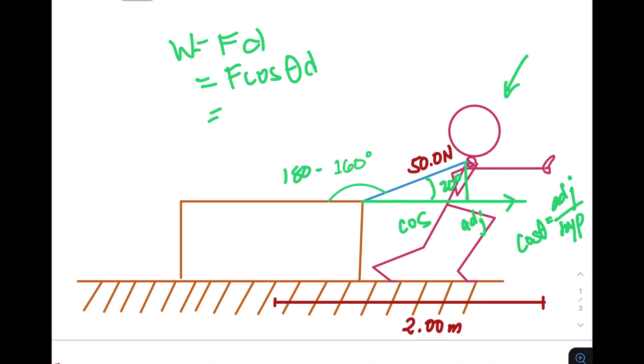Now let us substitute the values. So we have force, which is equal to 50 newtons times cosine 20 degrees times the distance of 2 meters. So if we compute that, that would be 93.96 newtons. However, we have three significant figures. So we round it off to 94.0 newton meters or joules.